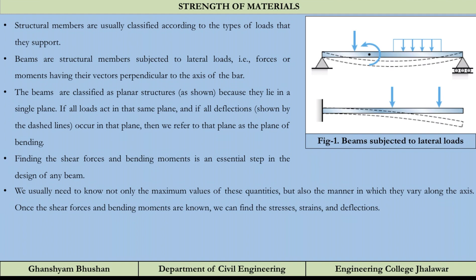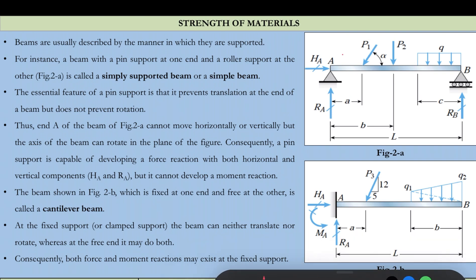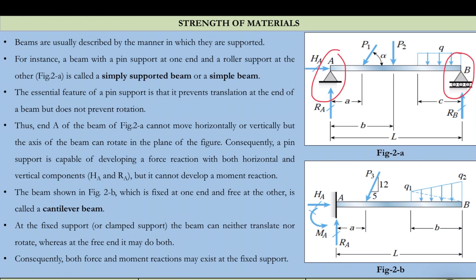Beams are usually described by the manner in which they are supported. Depending on support conditions we have: simply supported beams, cantilever beams, fixed beams, and overhang beams. For example, a beam with a pin support at one end and a roller support at the other is called a simply supported beam — this is the simplest possible beam configuration.